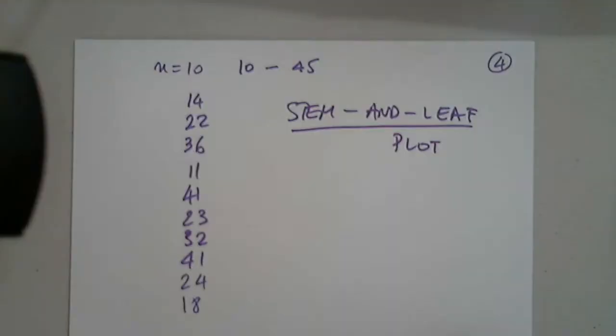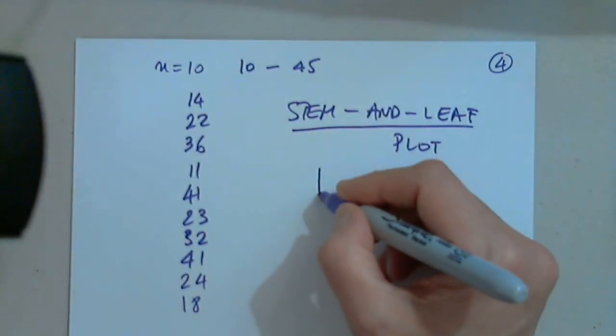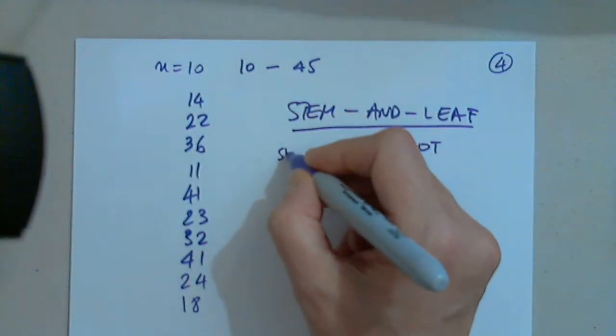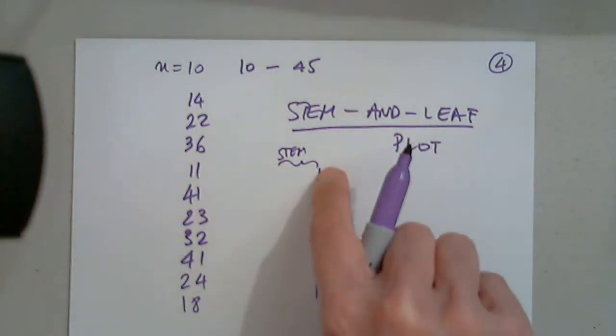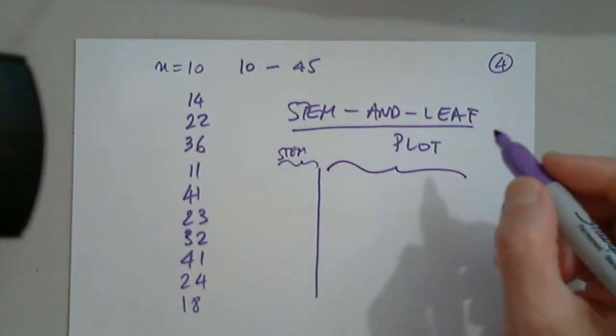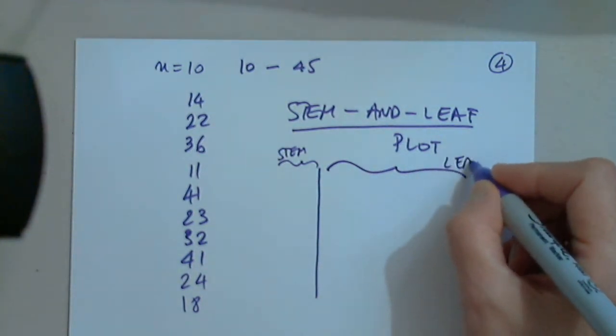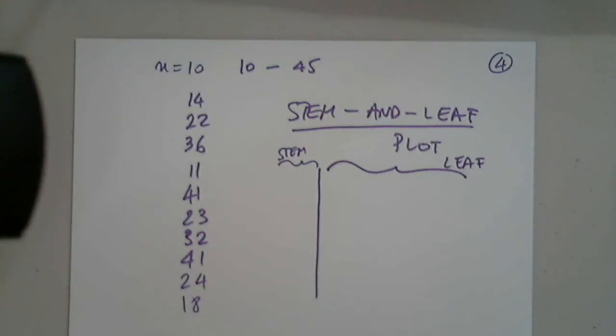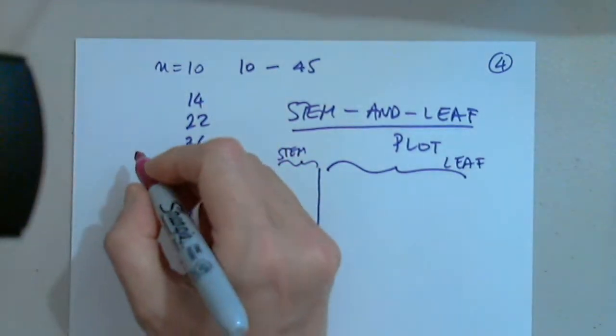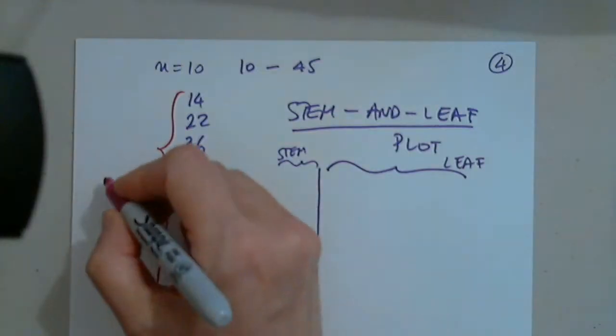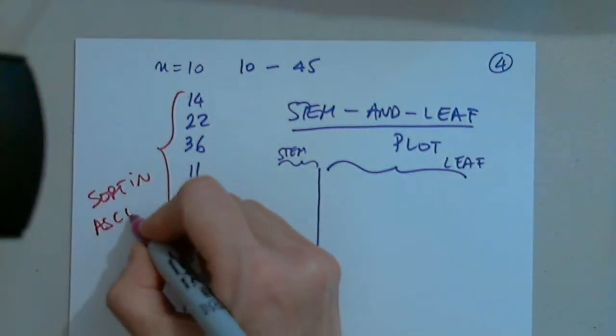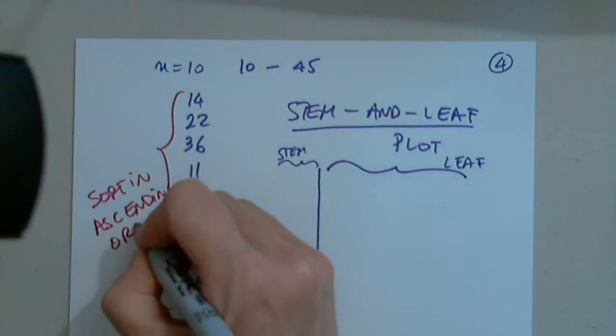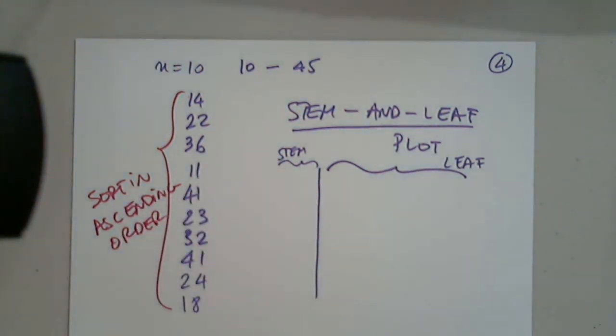Okay, so it has a stem. This will be the stem, what we write here on this side of the vertical bar. And this will be the leaves, or the leaf, for each stem, piece of the stem. Yes, we have to sort the data in ascending order. So that's our first step.